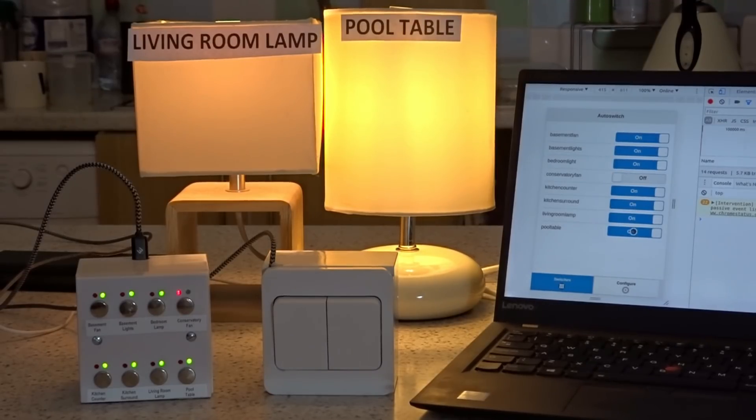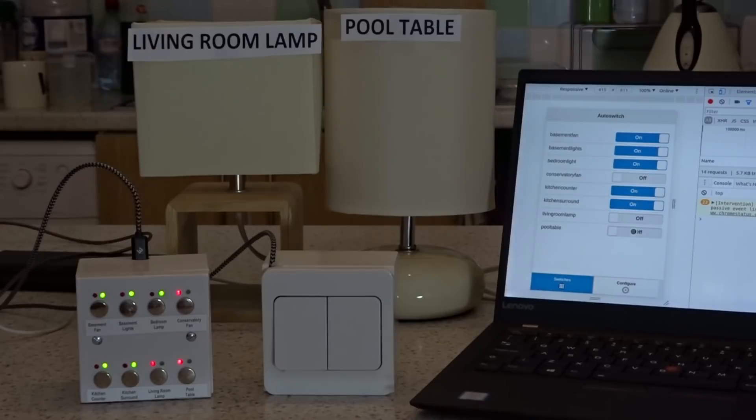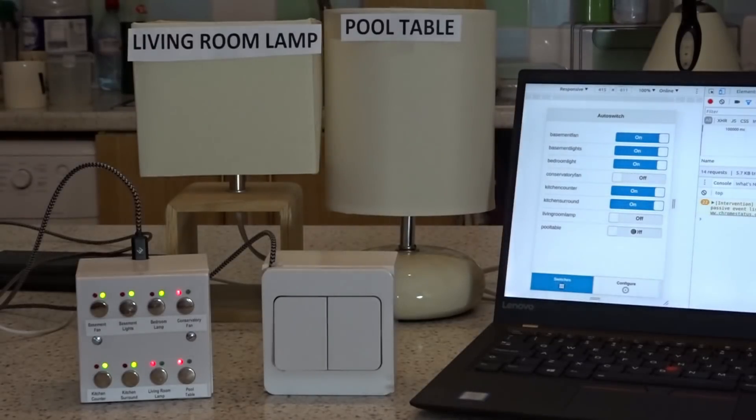What you can also do is control these switches via Alexa. So let's give that a go now. Let's turn that living room lamp off. So Alexa, turn off living room lamp. You can see that's reflected in real time on the mobile app and also physically on the switch. Now let's turn the pool table off. So Alexa, turn off pool table. Okay. And there we go. So that's turned off as well.